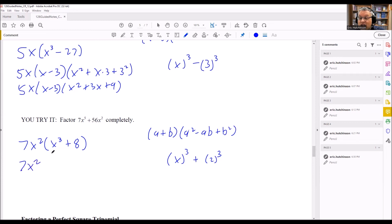Writing this out, I have 7x squared. And that's going to be a plus b, so x plus 2. And then I have the rest of it here, x squared. I have a minus ab, so minus x times 2, and then plus 2 squared, which means that I have 7x squared times x plus 2 times x squared minus 2x plus 4.